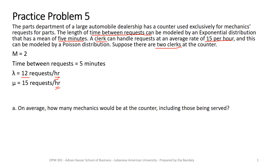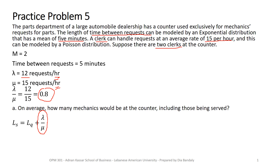Now we get our famous ratio lambda over mu, and we have 0.8. The first part asks: how many mechanics would be at the counter, including those being served? That is Ls. We know that Ls equals Lq plus lambda over mu, where lambda over mu represents the number of people being served at any point in time. So we need to find Lq.